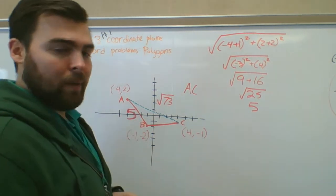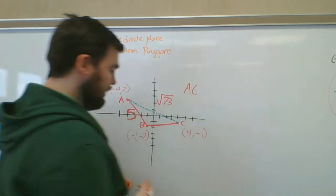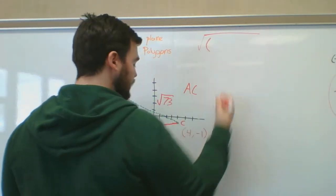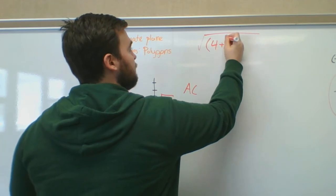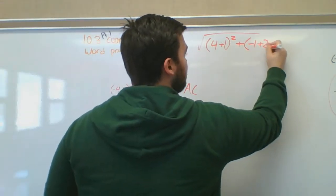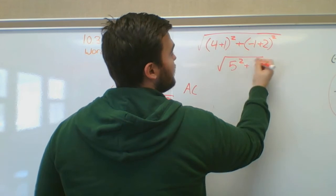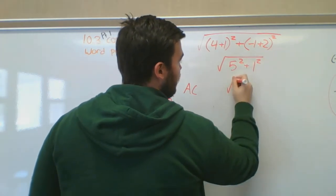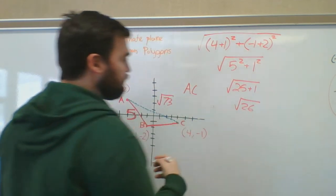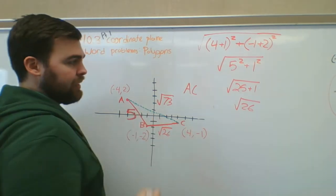Now for BC — it doesn't matter which point you call x₂ or x₁. I'll do √((4 − (−1))² + (−1 − (−2))²) = √((4 + 1)² + (−1 + 2)²) = √(5² + 1²) = √(25 + 1) = √26. So BC = √26.